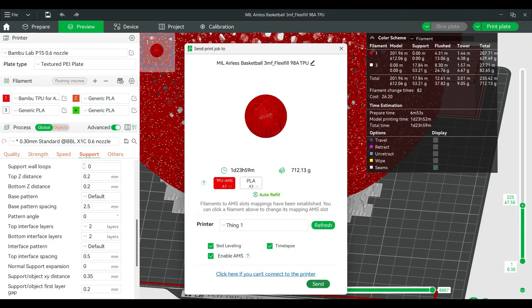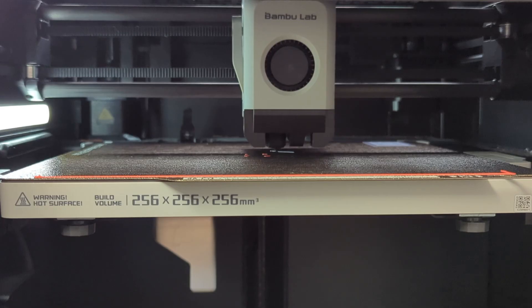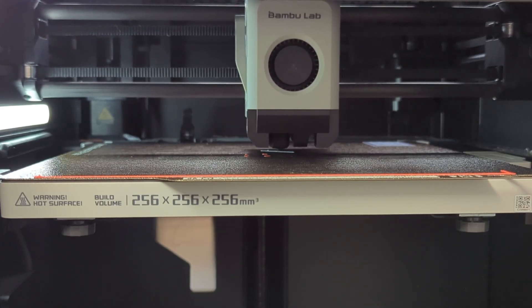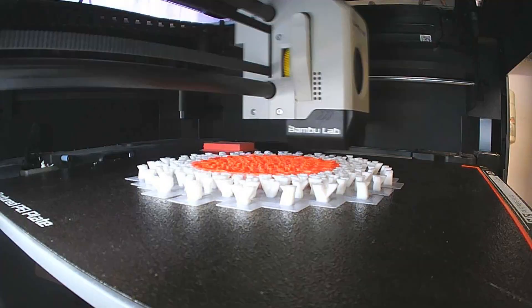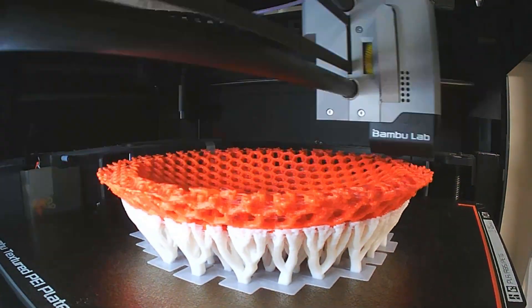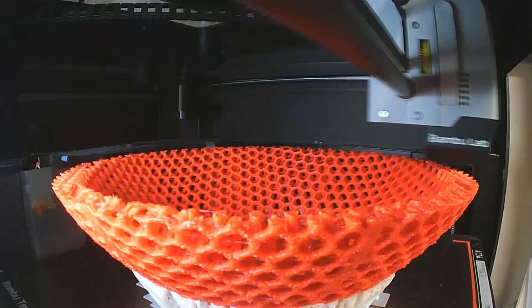I have to say I was a bit skeptical after trying a lot of different flexible filaments in the AMS and having really bad results. I got lots of tangles and clogs and all sorts of issues. But this stuff printed in the AMS no problem. As you can see in this printing video, it printed the supports and the TPU all together just fine.